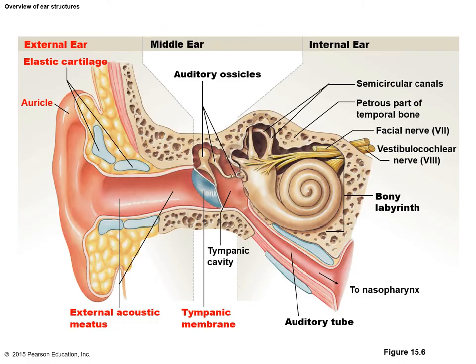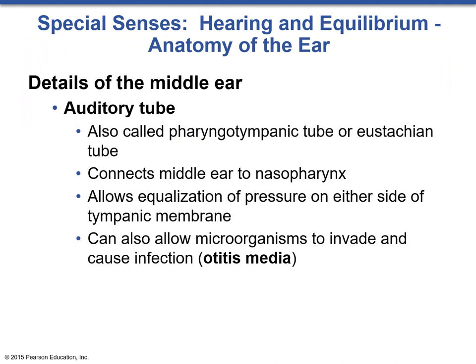Moving into the middle ear, we get the auditory tube, also called the pharyngotympanic tube or the Eustachian tube, which connects the middle ear to the nasopharynx. It allows for the equalization of pressure on both sides — this is why you have to pop your ears when you go up in altitude, like in a plane, typically through yawning. It can also allow microorganisms to invade, causing infection of the otitis media, more commonly known as an ear infection. This is more common in children due to the short, broad nature of the Eustachian tube.